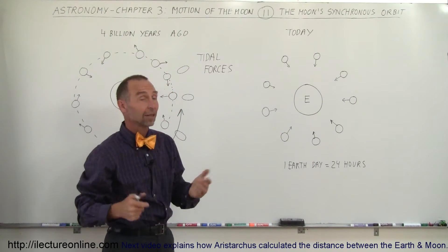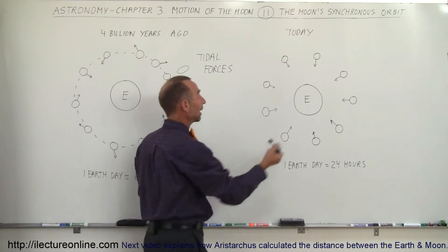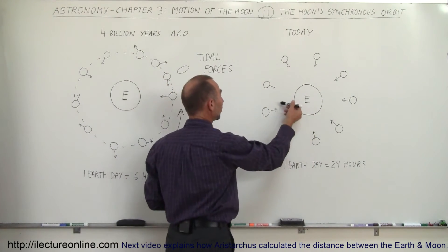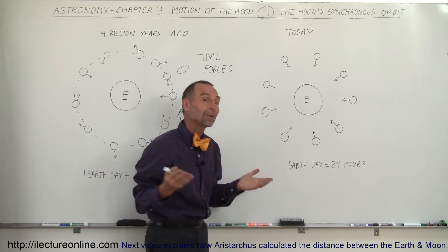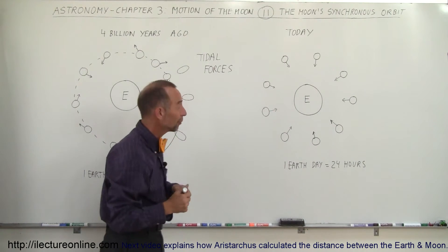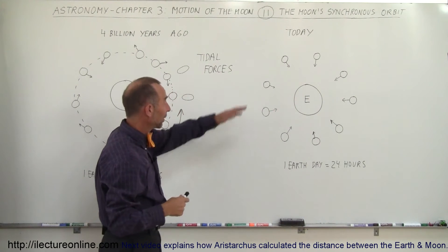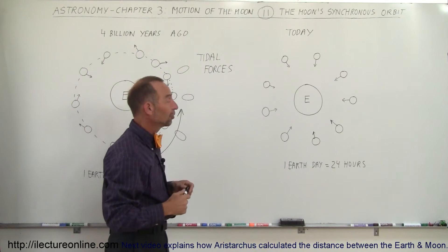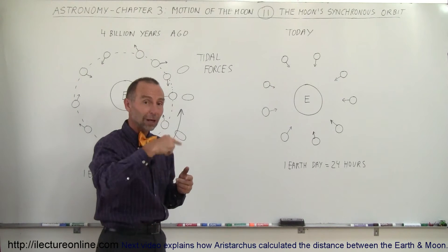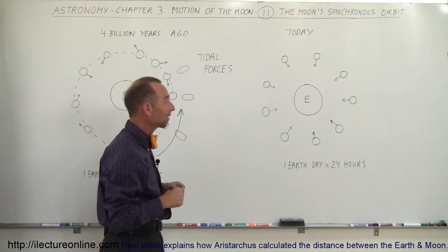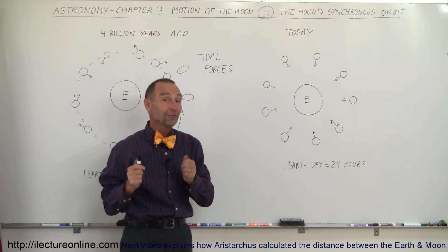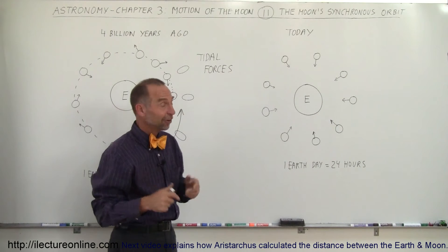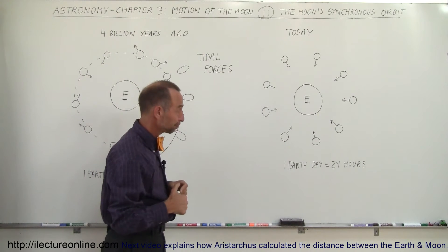To see the back side of the Moon, we have to travel with a space rocket to the other side and take pictures of it. Some people actually saw it for real, because they traveled to the Moon and flew around it and could see the back side. It actually looks very different than the front side of the Moon.